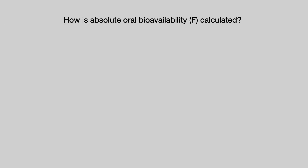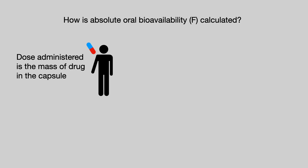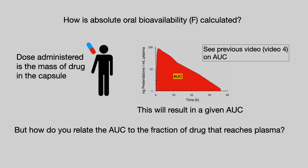So how is absolute oral bioavailability calculated? We start by giving an oral dose to some individual. We know the dose because it is the mass of drug in the capsule or tablet. That mass of drug will result in some given area under the drug concentration time curve, or AUC. If you're not familiar with AUC, it was covered in the previous video — video 4 — so I suggest you go back and refresh your memory.